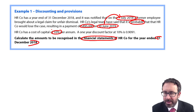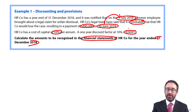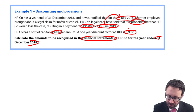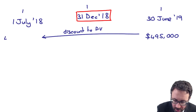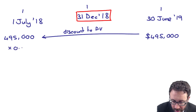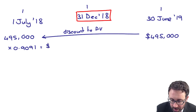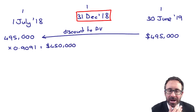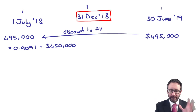The examiner takes pity on you. A one-year discount factor at 10% is 0.9091, and it will be given to you within the exam. So you take the $495,000, multiply it by 0.9091, which gives you $450,000 to the nearest $1,000 — it's $450,000 and a smidgen more.